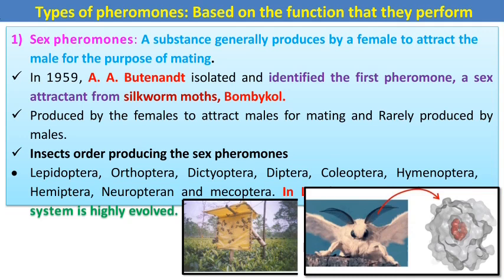Sex pheromones were first isolated by Butenandt from the silk moth. The pheromone is bombykol — the first isolated pheromone from an insect. Sex pheromones are a substance generally produced by females to attract males for the purpose of mating. Lepidoptera is the highly evolved order in sex pheromones.